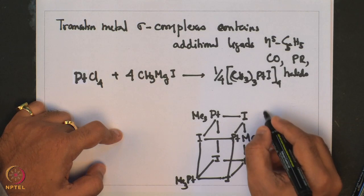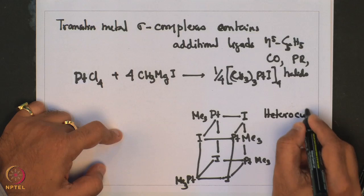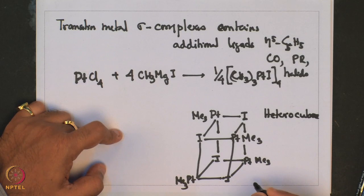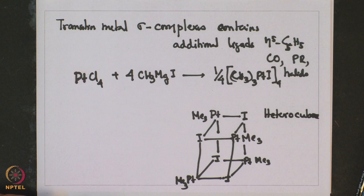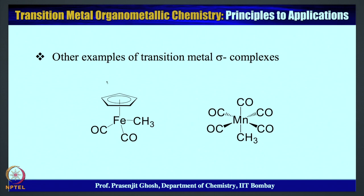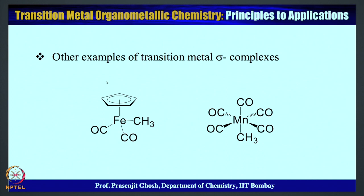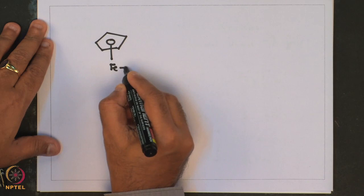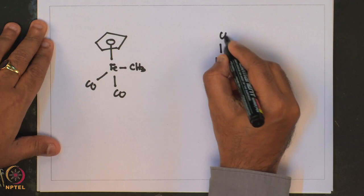This structure is called a heterocubane. What emerges is that homoleptic sigma alkyl complexes of transition metals are indeed a challenge to make, and most attempts result in transition metal sigma alkyl complexes containing either the solvent molecule or other additional ligands, as in the case of the platinum compound discussed here and manganese compounds shown as further examples.